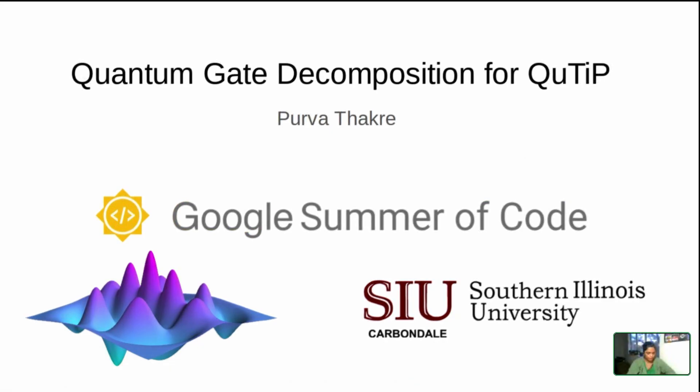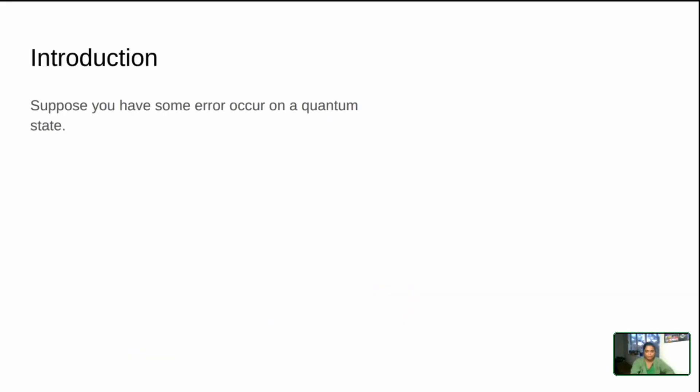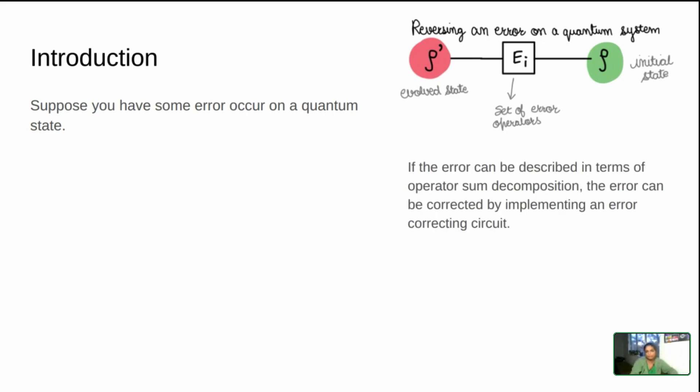I'm going to talk about my project over the summer. I'm a PhD student working in quantum error correction. The basic idea is you want to try to correct some form of an error that has occurred, and there are some cases where the error is correctable when the operation can be written or this evolution of rho prime can be returned in terms of these error operators.